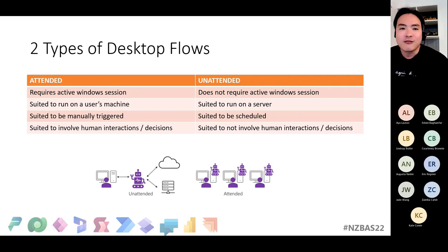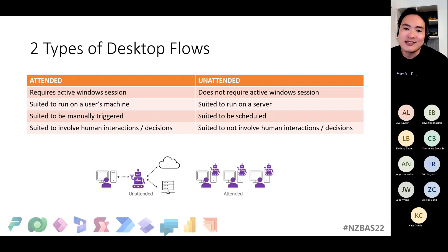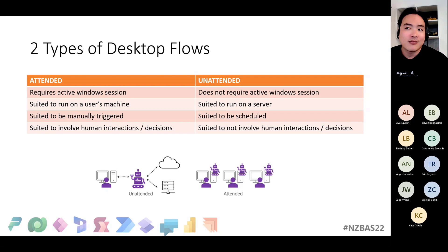There are two types of desktop flows. With attended desktop flows, the machine needs to be logged in with the account associated with the connection. With unattended flows, it doesn't need to be logged in — Power Automate will automatically log onto the machine, run the flow, and log back out. Unattended flows are more suited to server-type scenarios with scheduled jobs running throughout the day and night, while attended flows might be triggered manually by a person on their laptop.